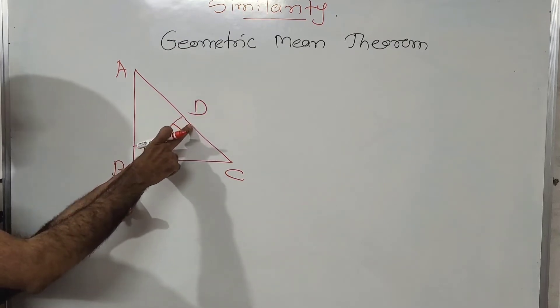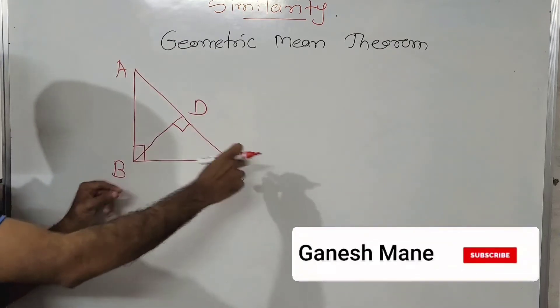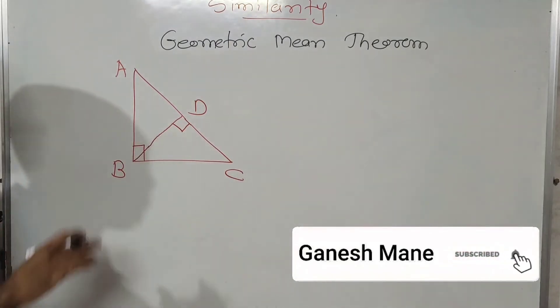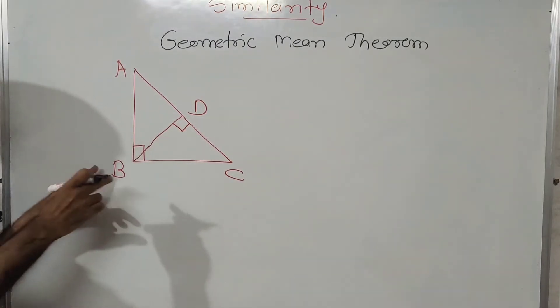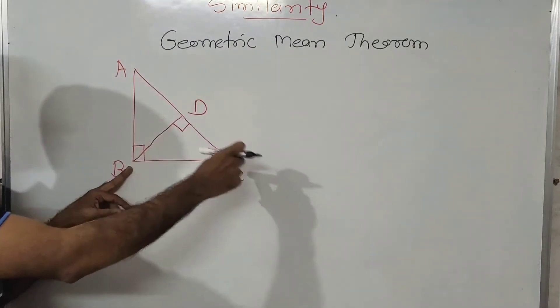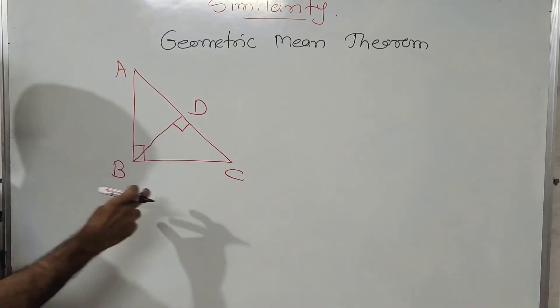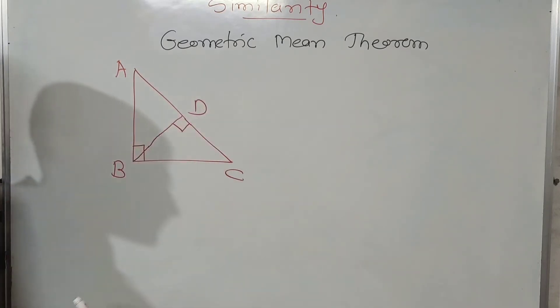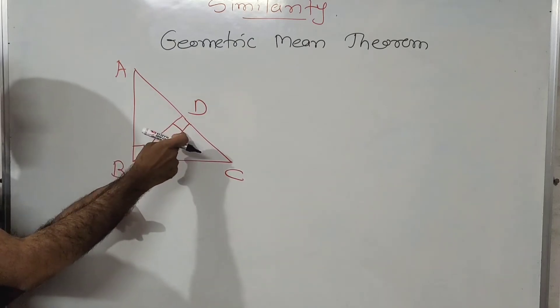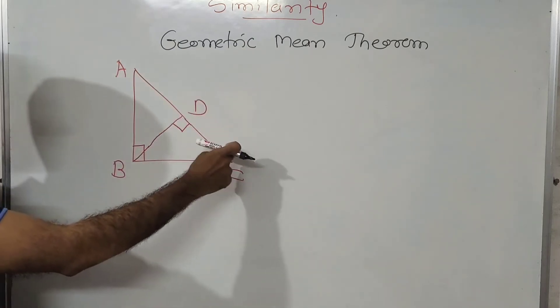In this case, BD is the perpendicular drawn on the hypotenuse AC. The geometric mean theorem states that a perpendicular drawn on the hypotenuse in a right angle triangle is the geometric mean of the two smaller segments created. That is, BD is the geometric mean of AD and DC.